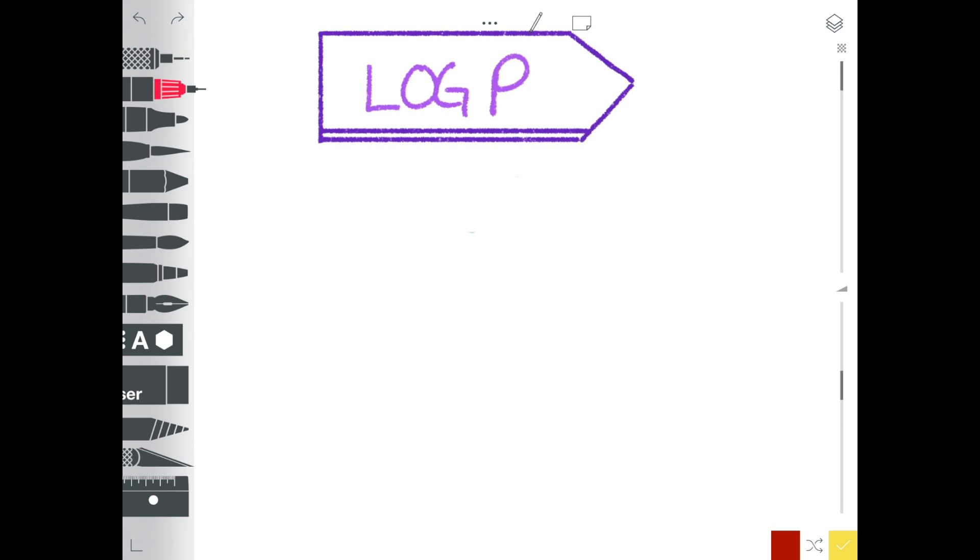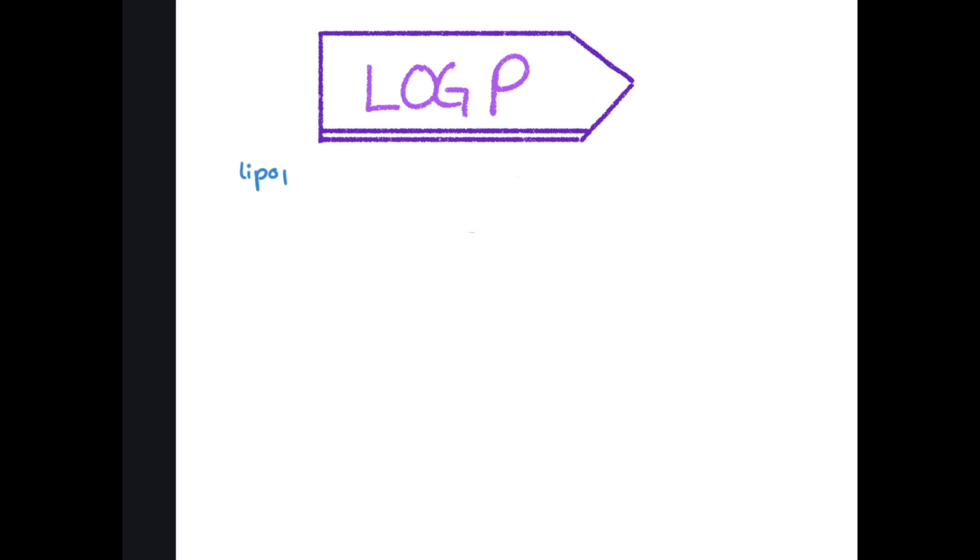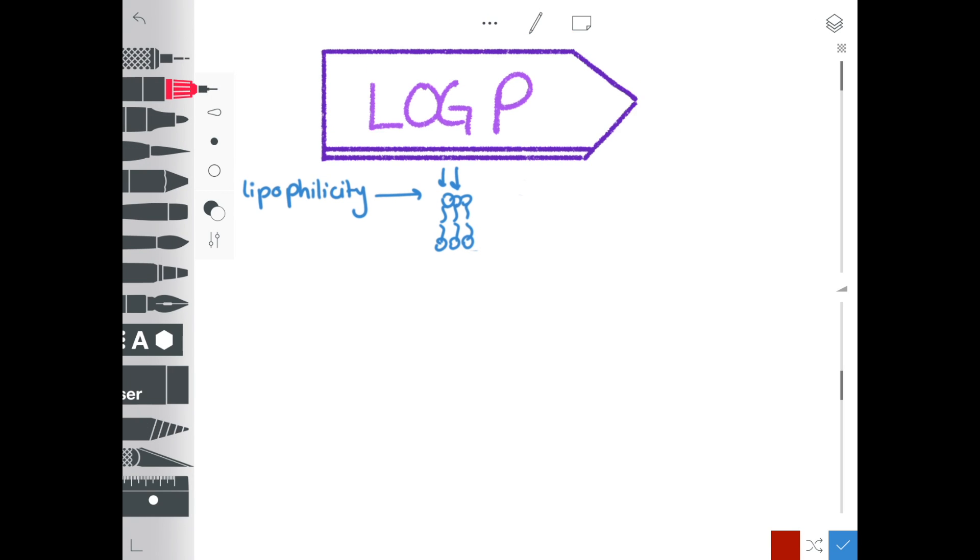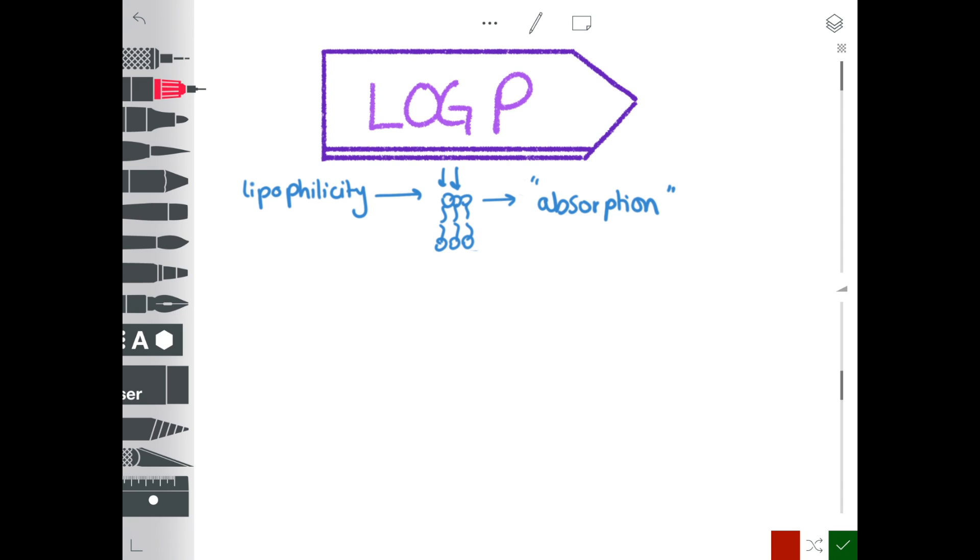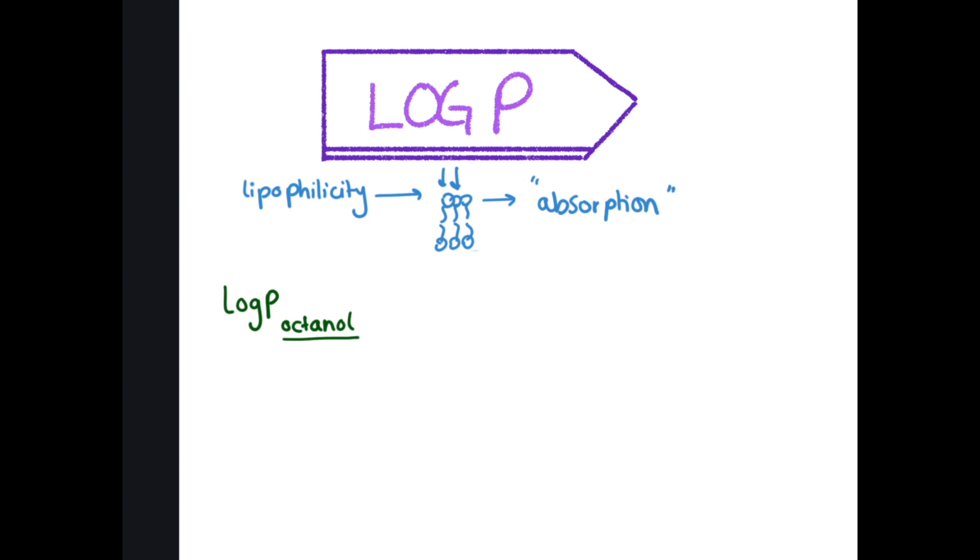This video will briefly discuss LogP. LogP is an important parameter in predicting lipophilicity. Lipophilicity determines whether or not the drug will be able to cross the lipid membranes, which relates to absorption.